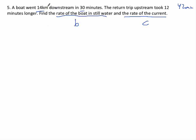Okay, so downstream 14 kilometers in 30 minutes. So that's 28 kilometers per hour is the rate. Okay, that means now you're going downstream. You're going with the current. So that means b plus c equals 28. Okay, if you add the boat's rate to the current rate, then you get 28 kilometers per hour.